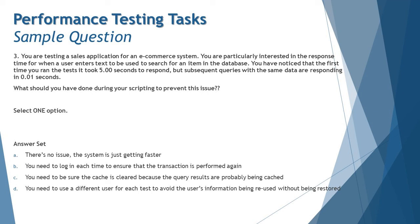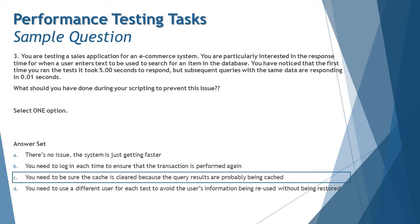Option C: you need to be sure the cache is cleared because the query results are probably being cached. No further justification required — you know that caching boosts execution from the second iteration onward, not the first. Option D: you need to use a different user for each test to avoid user information being reused. Users are not responsible for this — the scenario is about search results, not login or logout. The right answer is C: ensure the cache is cleared because query results are being cached, boosting subsequent executions.